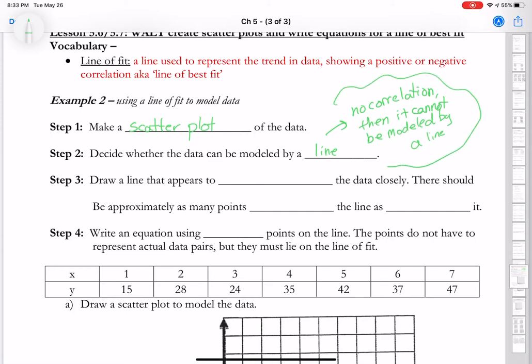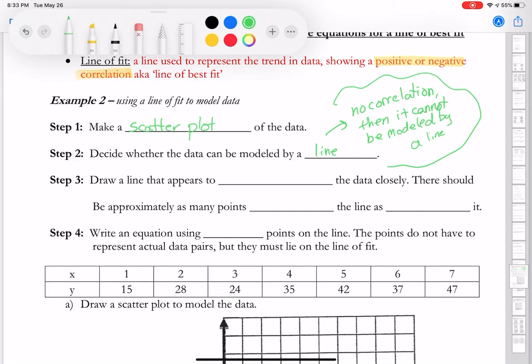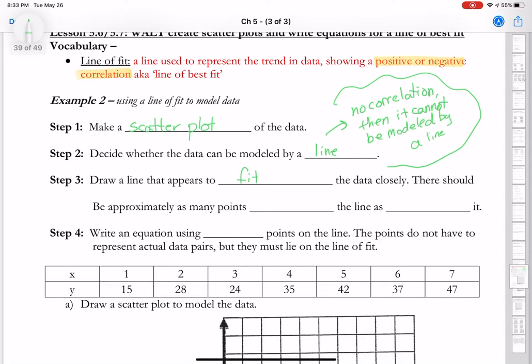So just make sure you have that note or have it in the back of your mind because the whole point is that it's showing whether it's a positive or negative correlation. Third step is to draw a line that appears to fit, loosely fit the data as close as possible. So there should be approximately as many points above the line as below it. Now, this might not always be true, but again, it says approximately. So you want to try your best to get as many points above the line as below.